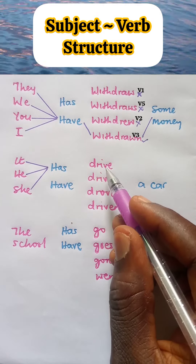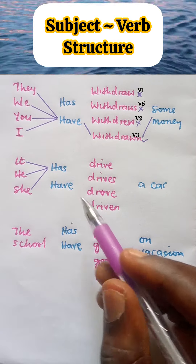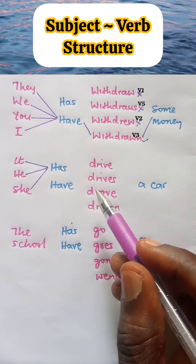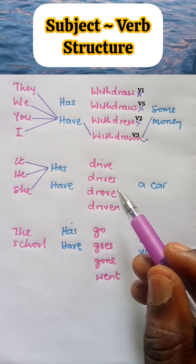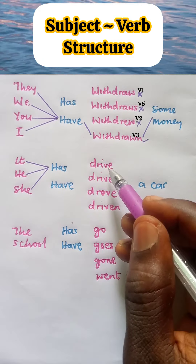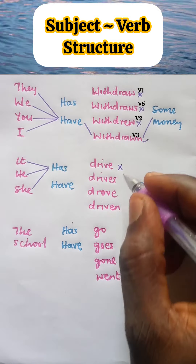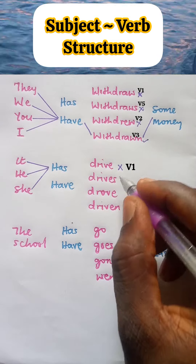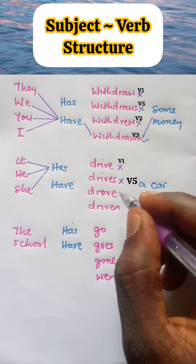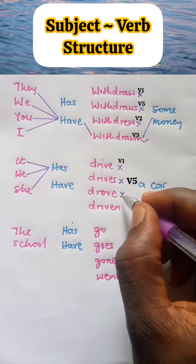Now, coming here we have the lexical verb. As explained earlier, after an anomalous verb the next lexical verb must be verb three, which is past participle. So let's go. Has drive? Wrong — this is verb one. Has drives? Wrong — this is verb five. Has drove? Wrong — this is verb two.